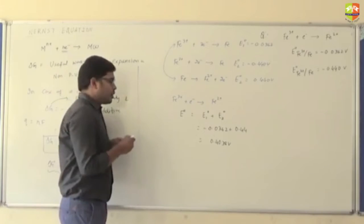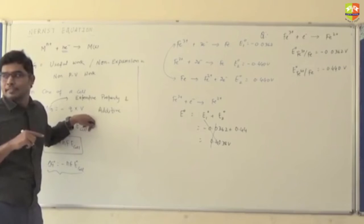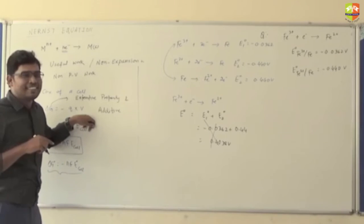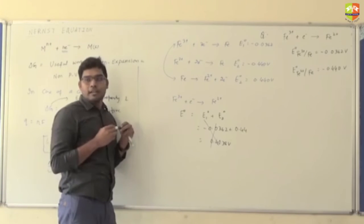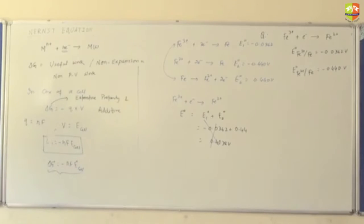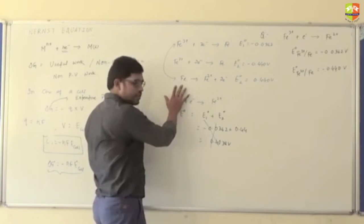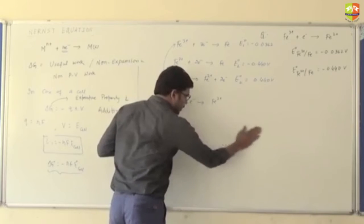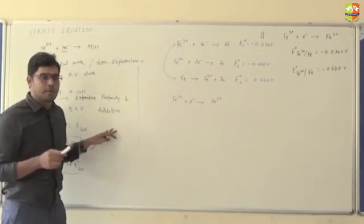So for this target reaction, E° would naively be E°₁ plus E°₂, giving minus 0.0362 plus 0.44, which equals 0.4038. But this is wrong. EMF of the cell is an intensive property — we cannot add or subtract EMF directly.